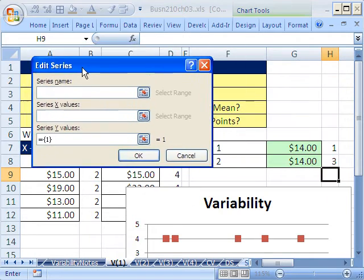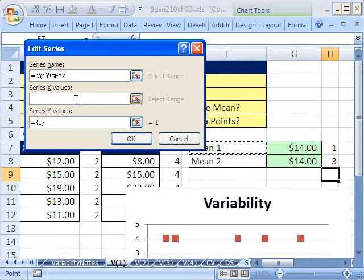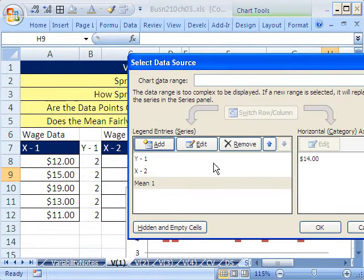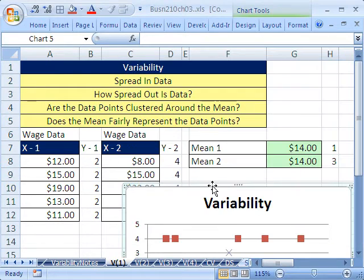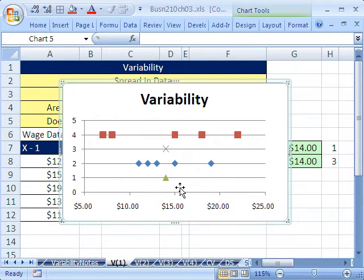We can already see which one has visually more spread in the data. But let's go ahead and plot these other two values too. I need to move it down here so I can highlight these. Go back up to Design, Select Data, Add. The name for this one, I'll just click Mean 1. The x will be that and the y, I'm going to highlight that and hit Delete, and this will be the 1. Click OK. Now I'm going to click Add again. The series name will be Mean 2. The x will be this, highlight and Delete, then click OK.